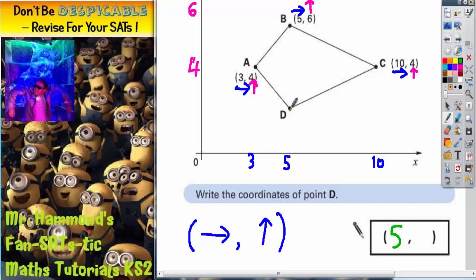And the second number, how far up? Well, we've got no number here. But what we do know is that this point is 6 up, this point is 4 up. Now, this is a gap of 2.